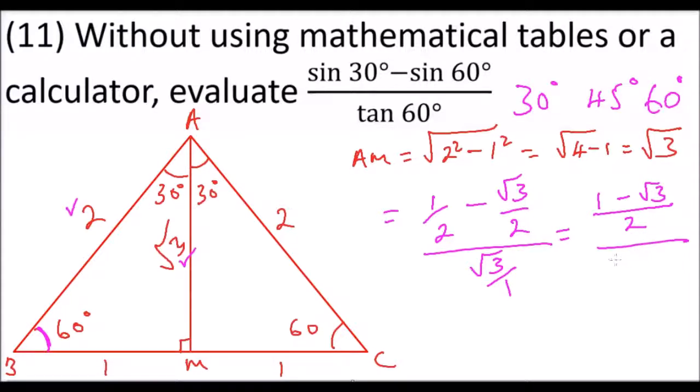All this is divided by root 3. So we cannot leave it like that. This equals 1 minus root 3 divided by 2, multiplied by, because this is division, we can say divided by 1 over root 3, which equals...